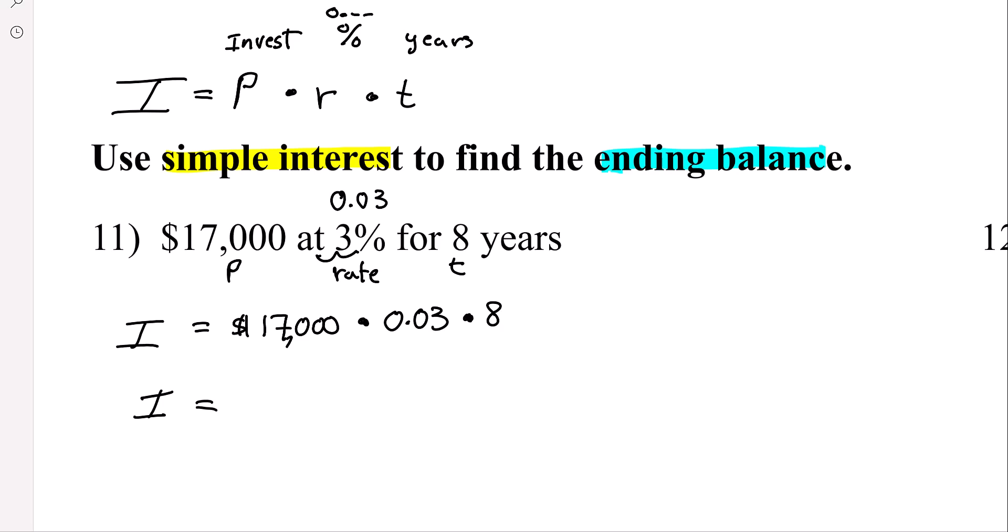And then you're going to type all of that into your calculator. So $17,000 times 0.03 - my calculator was doing something weird - times 8.